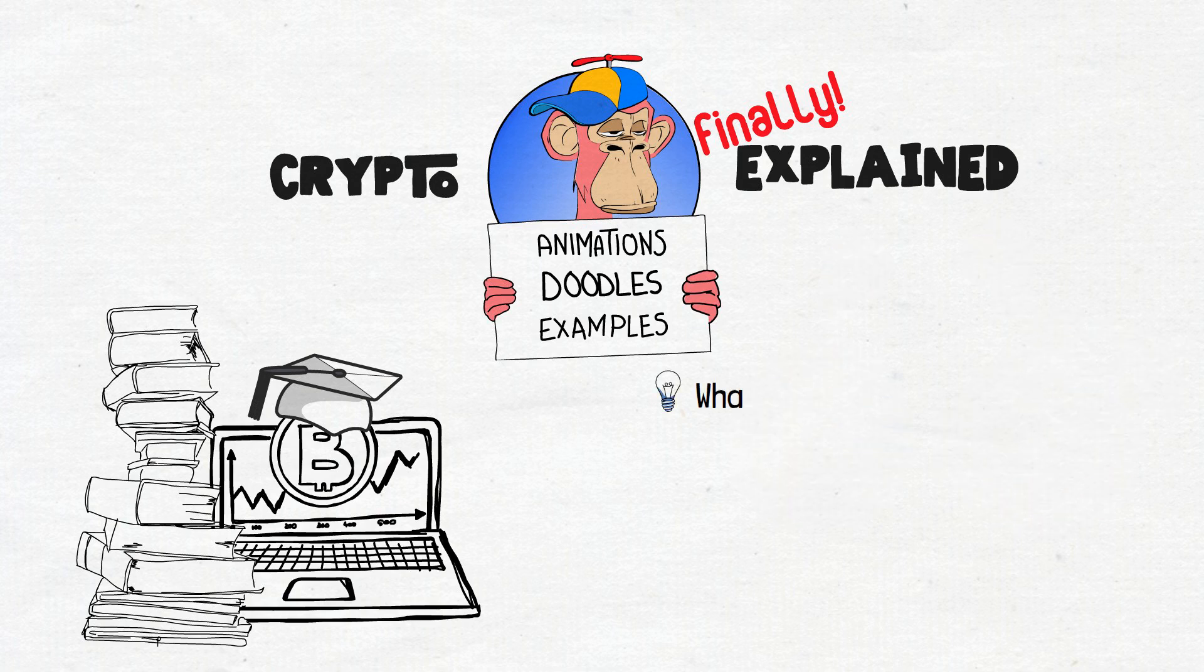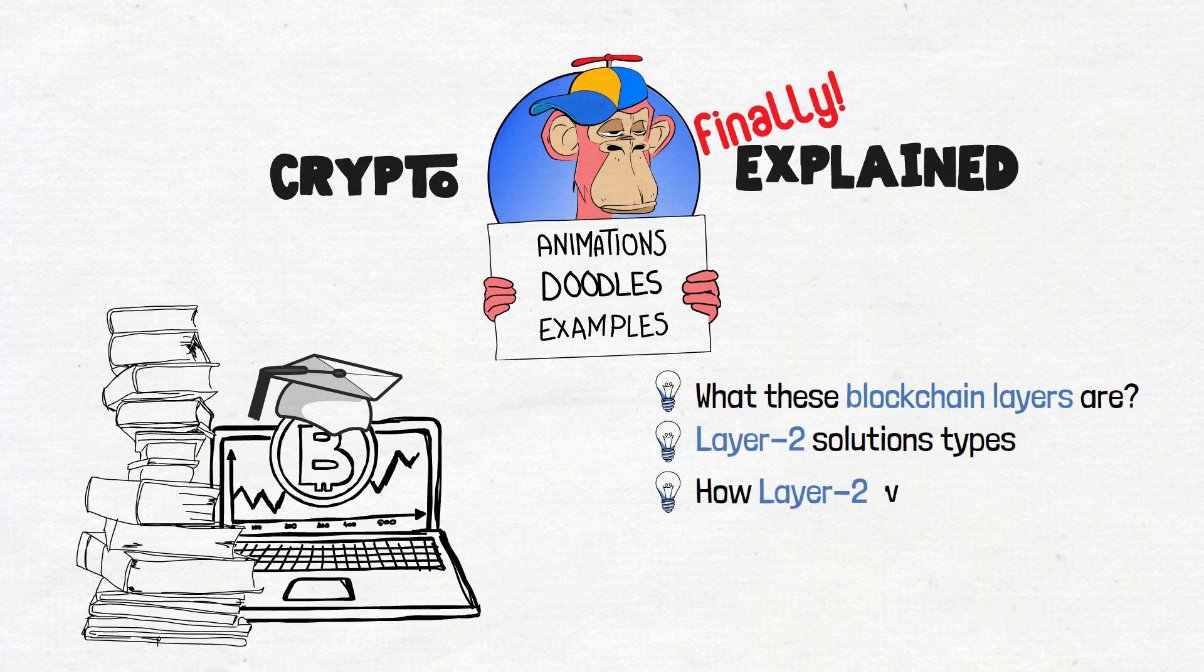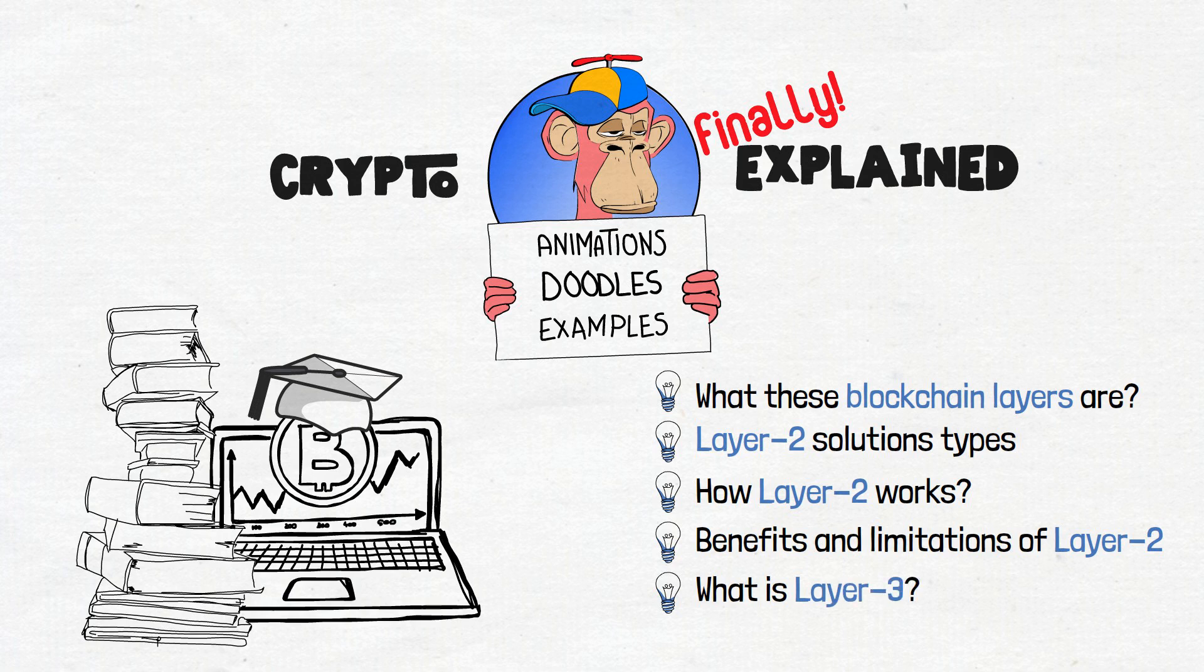In this video, we will work our way through understanding what these blockchain layers are, the types of Layer 2 solutions that exist, and how Layer 2 works in general. Furthermore, we'll look into the benefits and limitations of Layer 2 scaling solutions, and finally, we'll take some time to talk about Layer 3 as well. So, first things first.